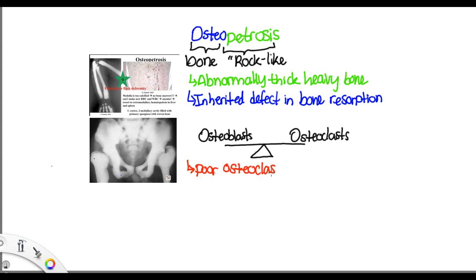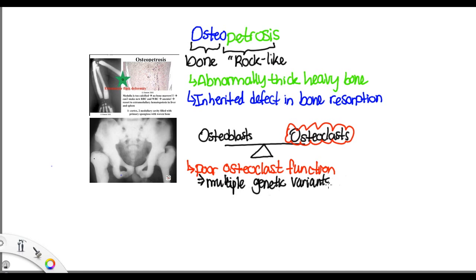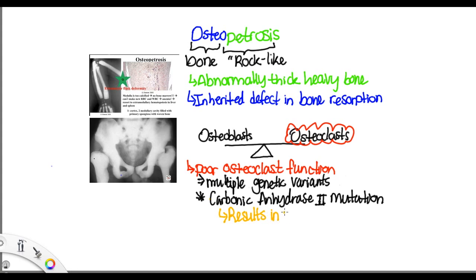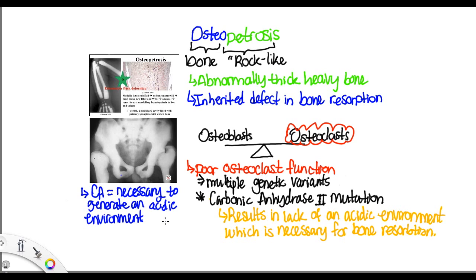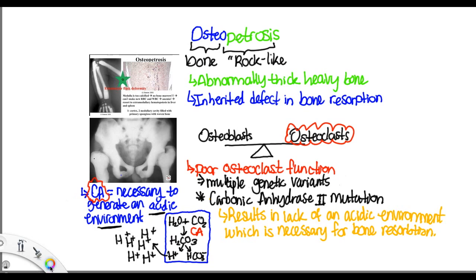This disorder is due to poor osteoclast function and has multiple genetic variants. Most important is the carbonic anhydrase 2 mutation, which results in a lack of acidic environment required for bone resorption. An acidic environment is necessary to remove calcium and resorb bone. Carbonic anhydrase combines water and CO2 to make H2CO3. Carbonic acid then breaks up into a proton and bicarbonate. This proton — the acid — leaves the cells, creating the acidic environment necessary for bone resorption. Without this ability, osteoclasts cannot resorb bone, which is exactly what occurs in the carbonic anhydrase 2 mutation.